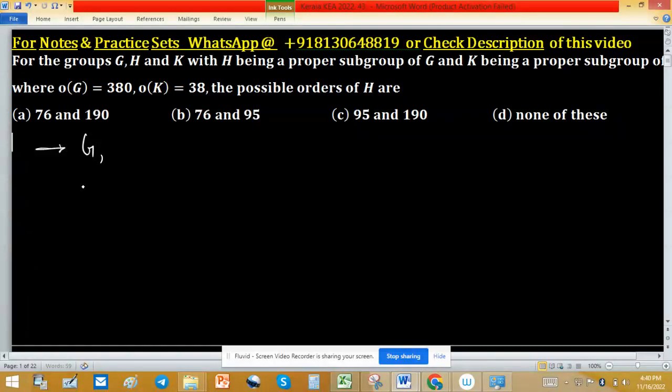For a group G, H and K, these are proper subgroups of G in such a manner: H is a proper subgroup of K, and K is a proper subgroup of G.